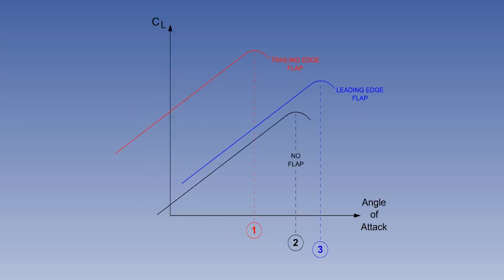This illustration shows the order of increasing stall angle for flaps. The configuration that gives the lowest stall angle is trailing-edge flaps. The next higher stall angle is no flaps, and the highest stall angle is leading-edge flaps. This is not an operational consideration, but the examiners might ask you.